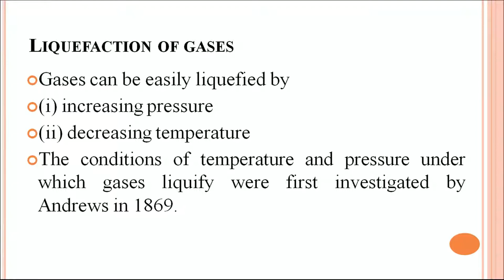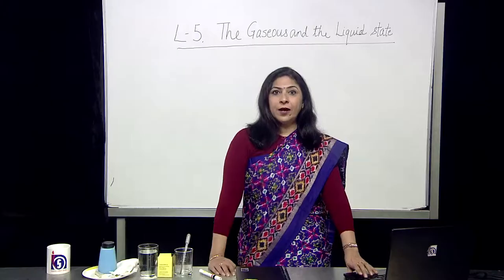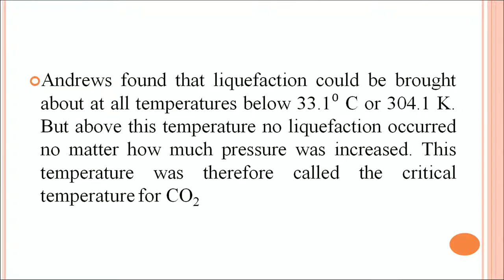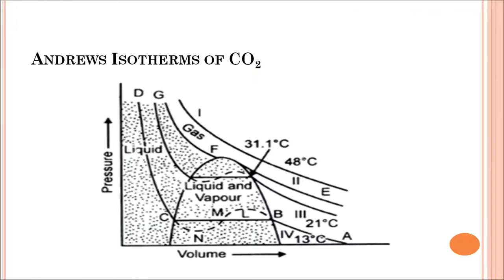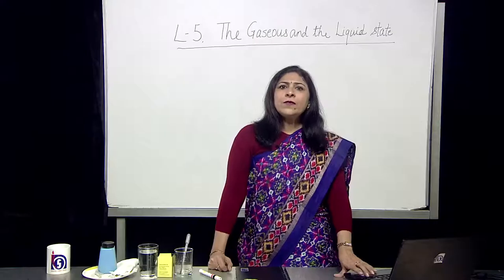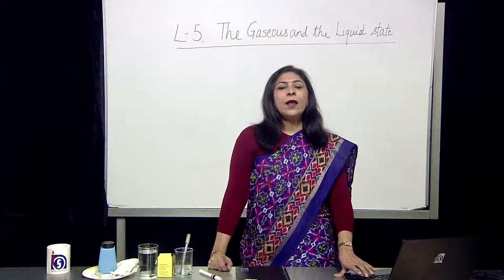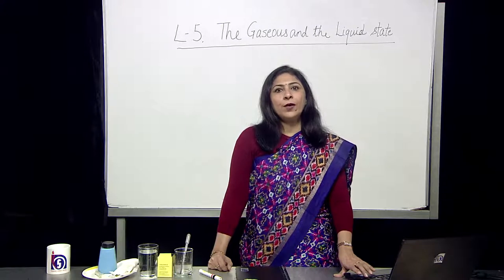The conditions of temperature and pressure under which gases liquefy were first investigated by Andrews in 1869. Andrews found that liquefaction could be brought about at all temperatures below 33.1°C (304.1 K). But above this temperature, no liquefaction occurred no matter how much pressure was increased. This temperature was therefore called the critical temperature for carbon dioxide. Andrews plotted a graph between pressure and volume at various temperatures for carbon dioxide.